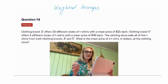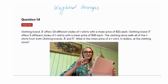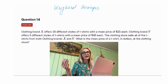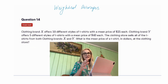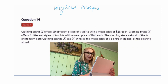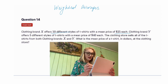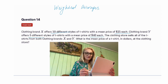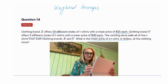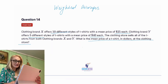Weighted averages — this is when you're calculating your average, but instead of giving all of the data points an equal weight, you're actually accounting for the importance of the data. So here we have 10 different styles at $25 each, and then we also have five different styles at $40 each. And they're asking you to calculate the mean price.